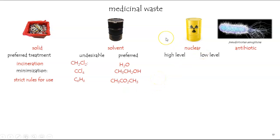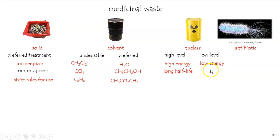Nuclear waste is a serious issue. High-level nuclear waste has high energy — perhaps gamma emitters, for example — with a long half-life. The low-level ones, which would be preferred especially when going into a human system, would be of lower energy. If you're using them as a detection method, you need enough energy to be detected, so a lot of times they're giving off low-energy gamma rays, but the lower the better. Also, go for a short half-life so it doesn't persist.